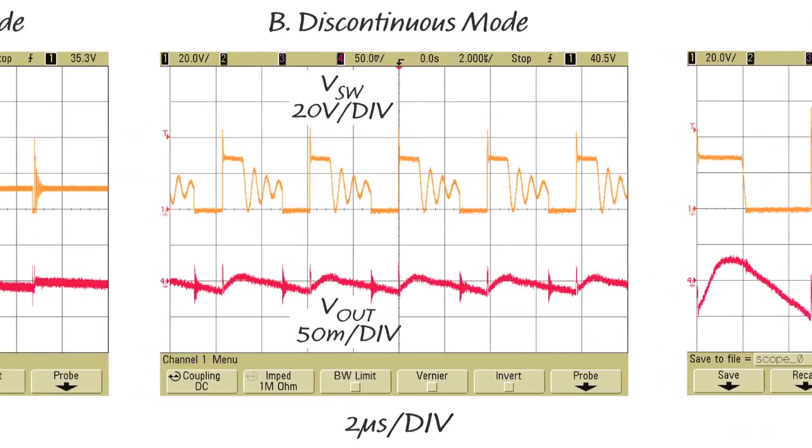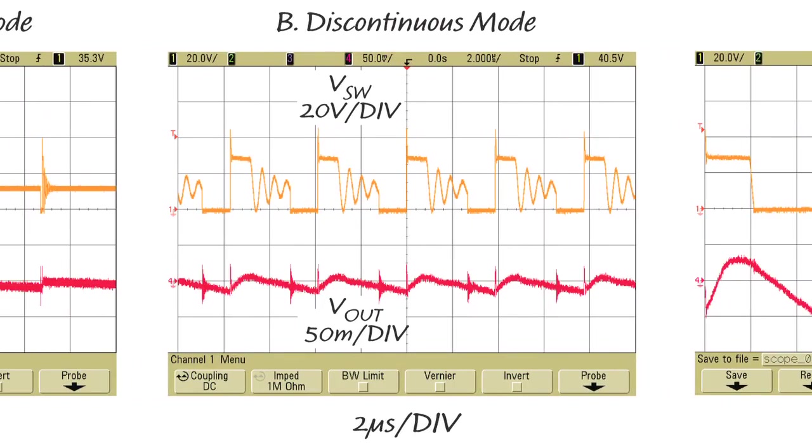At point B, with 0.5A load current, the LT8302 works in discontinuous mode.